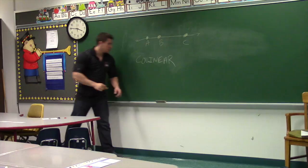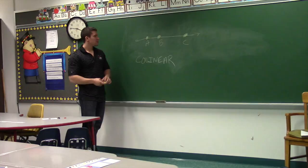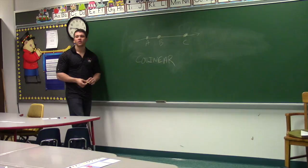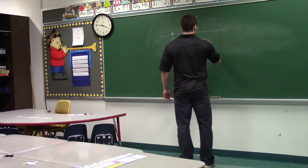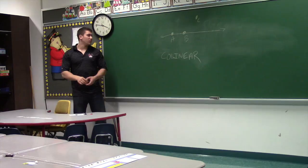What if these points aren't all on the same line? They're not all contained on the same line — let's say A and B are on the same line, but C is up here somewhere. What can we say about those three points? They're non-collinear.